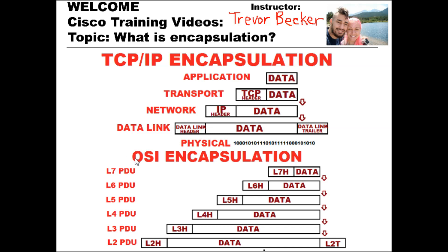Here's an example. Notice the OSI encapsulation section that I drew up on my screen. You have a layer 2 PDU and a layer 3 PDU all the way up to a layer 7 PDU. At each layer, the PDU refers to not only the header, but also the data that's encapsulated within it. So notice as we move from the layer 7 to the layer 6 PDU, the layer 6 header is appended to it, and the layer 7 header data and the application data is now all referred to as a layer 6 PDU, and so on all the way down the line.